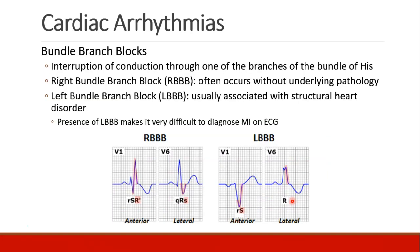Bundle branch blocks involve interruption of conduction through one of the branches of the bundle of His. Patients can have a right bundle branch block, which often occurs with no underlying pathology and usually doesn't pose significant concern. A left bundle branch block, on the other hand, seems to be associated more with structural heart disorders or ischemia, and patients with a left bundle branch block can be very hard to diagnose for MI on their EKG because of the artifact it causes. The right bundle branch tends to have an RSR prime pattern in V1, and in the lateral leads there's a wide S wave.